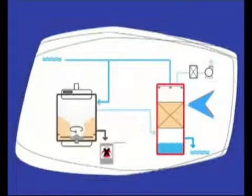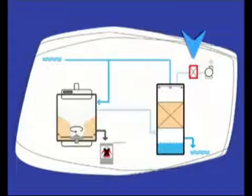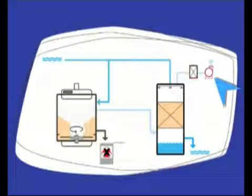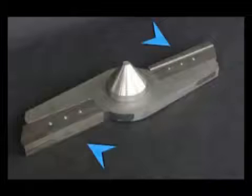A scrubber cleans up smoke, capturing any particles in suspension. A pump maintains the system under constant negative pressure to prevent any infected air from escaping into the environment. A filtration system treats outgoing air with an efficacy of 99.999%.